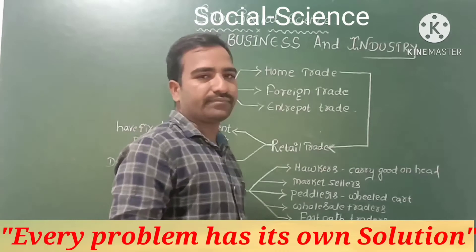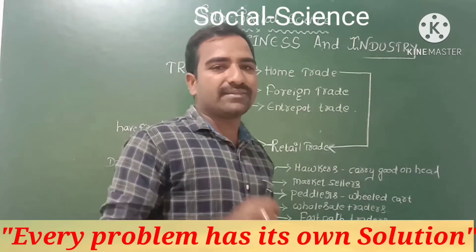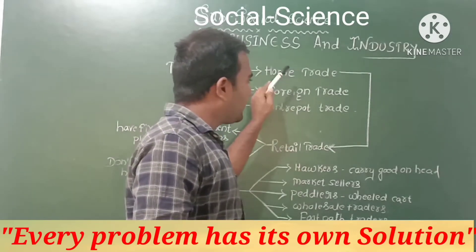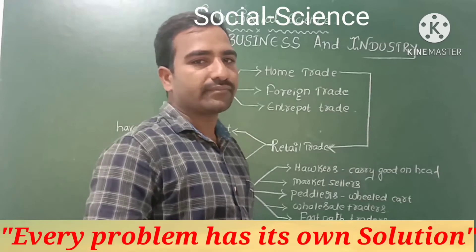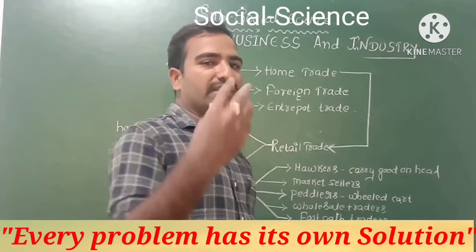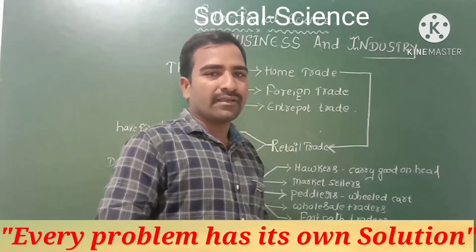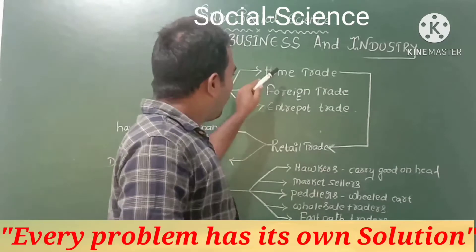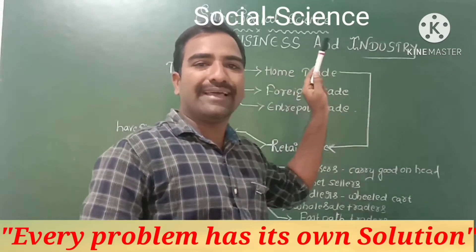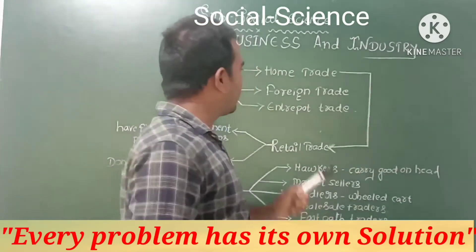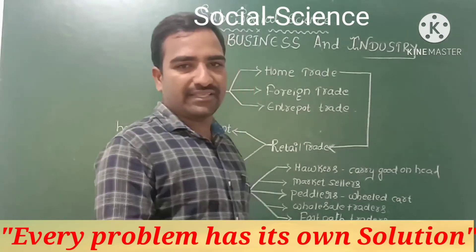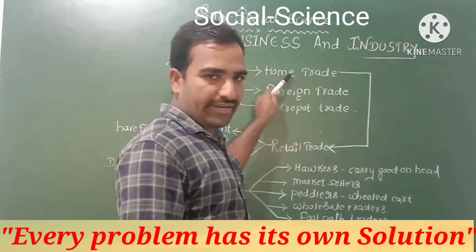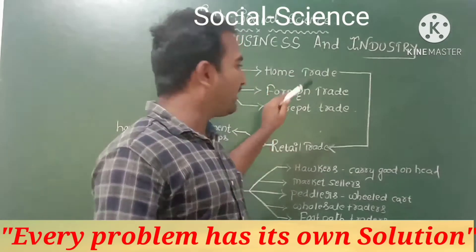The first one is home trade. The trade that exists within the country is called home trade — it is an internal activity. Foreign trade means the vice versa of home trade; the trade between two countries is called foreign trade. Home trade is also known by another name — native trade. Although your textbook mentions it as home trade, we can also call it native trade. Home trade is internal trade; foreign trade is external trade.